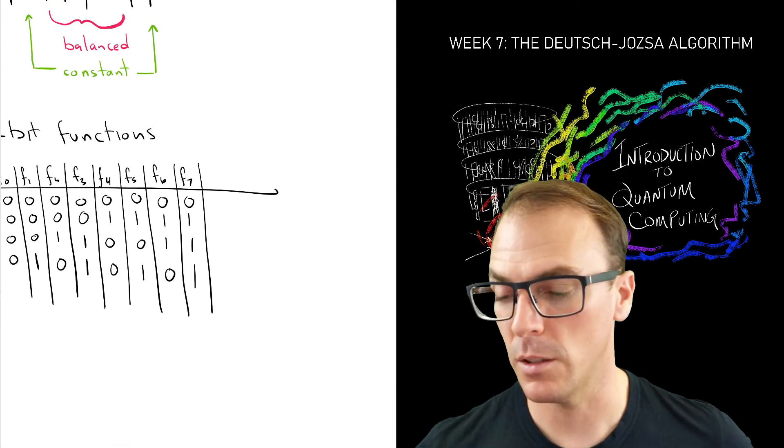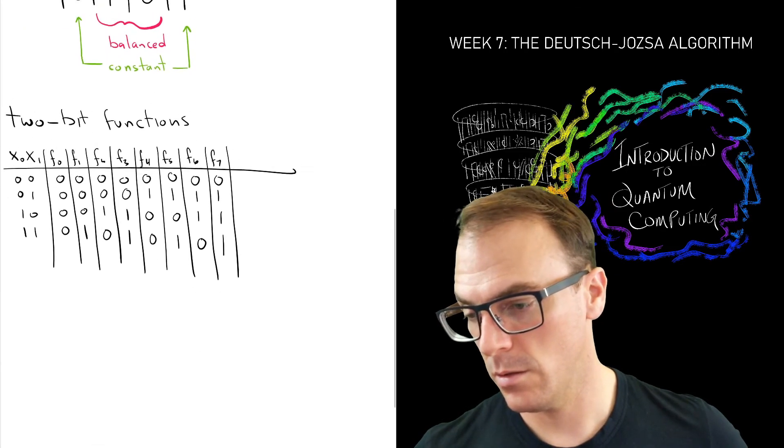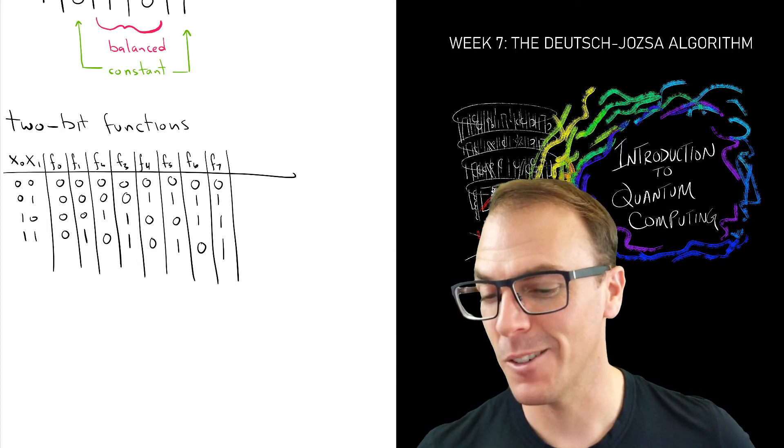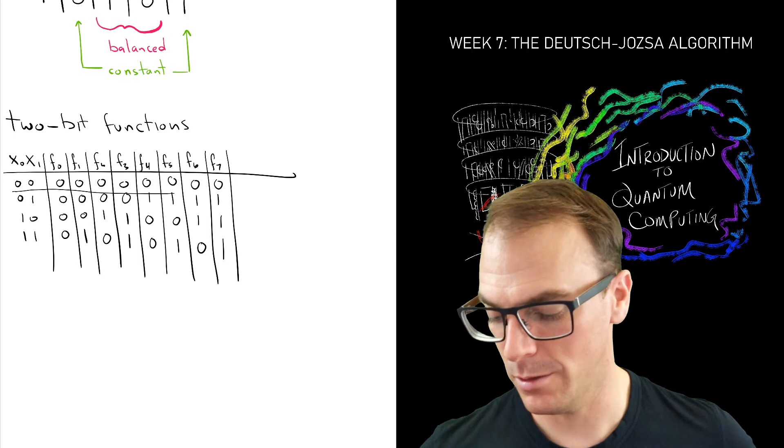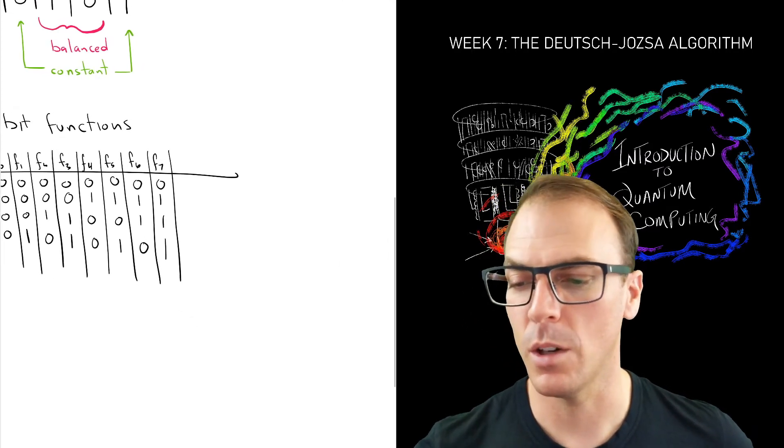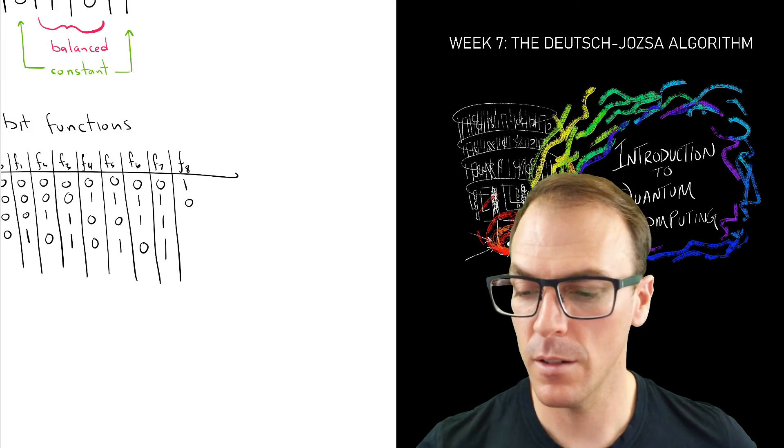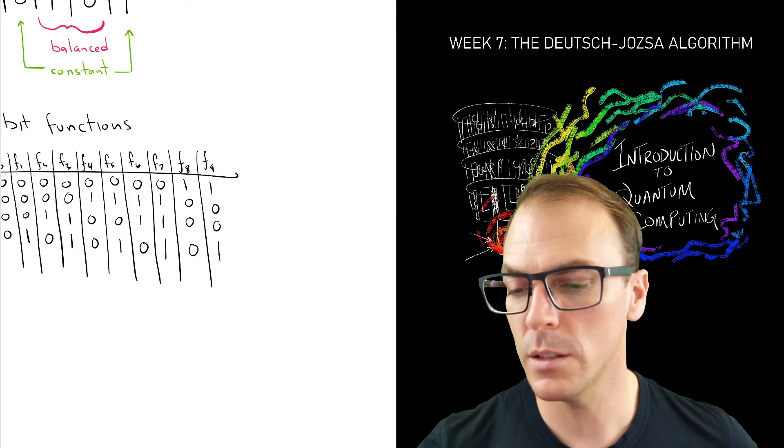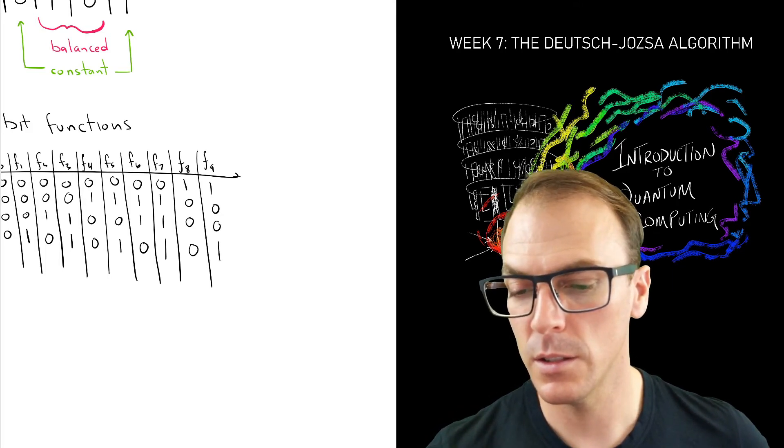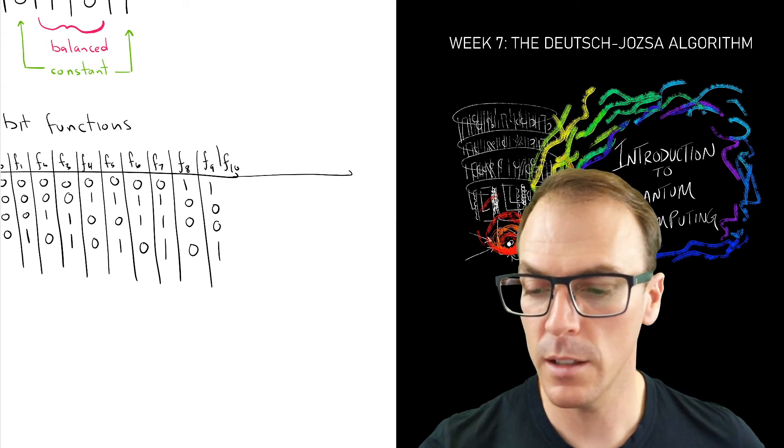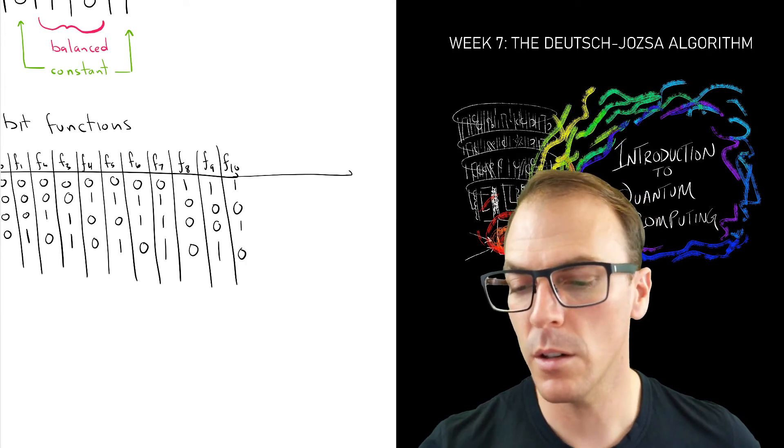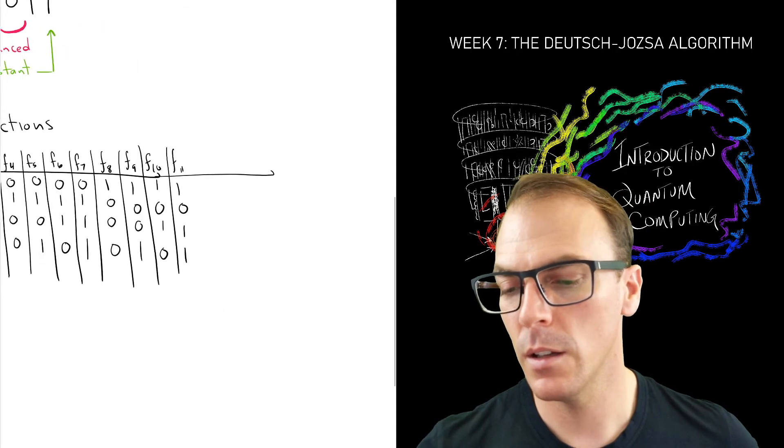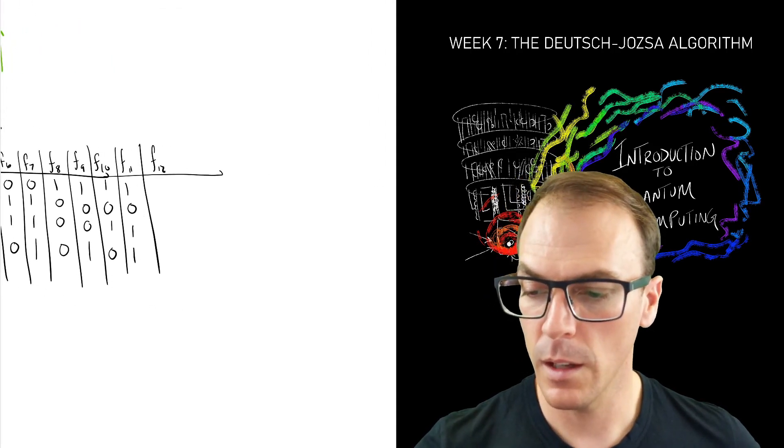We've got to do the rest. And maybe I should have drawn some nice straight lines here so that we can continue. [Continues enumerating f8 through f12 with binary values: one, zero patterns for each function]. Almost there.